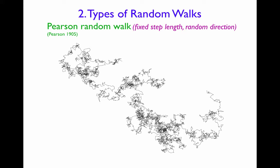First is the Pearson random walk, in which each step is a fixed length but in a random direction, and what I'm showing here is a typical trajectory of such a Pearson random walk.